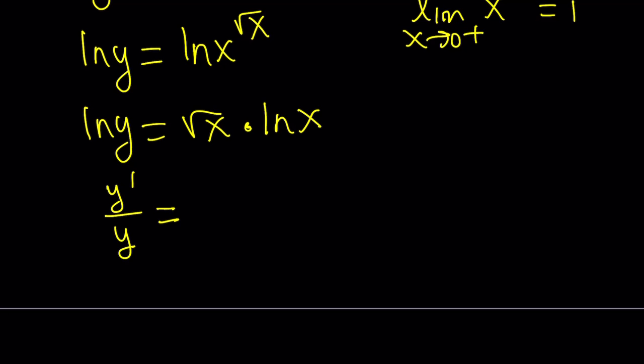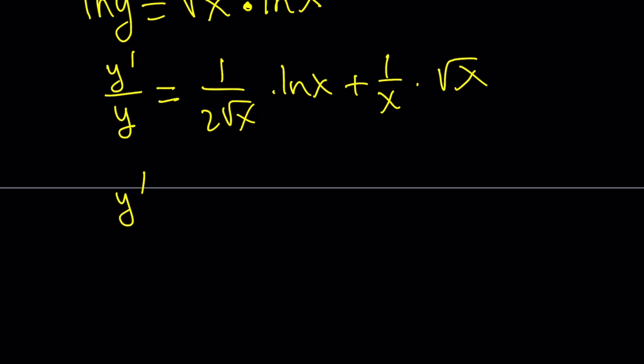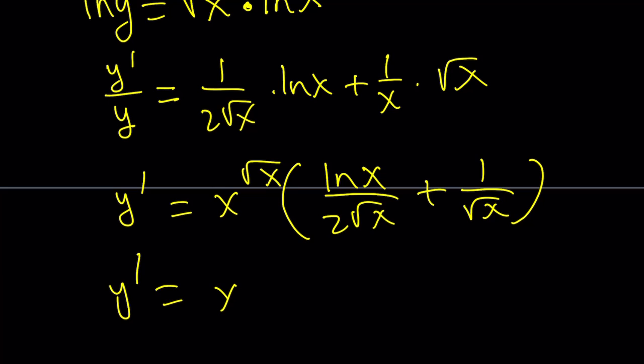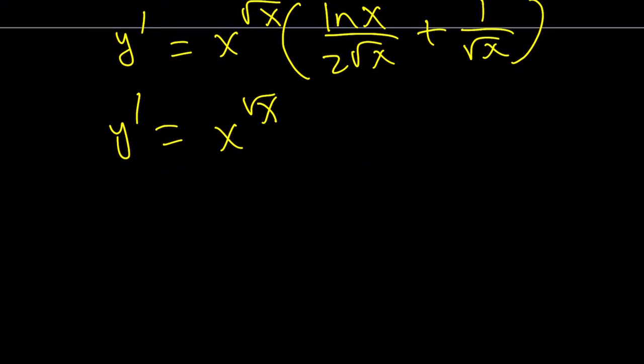I'm going to use the product rule on the right-hand side. The derivative of square root of x multiplied by LN x plus the derivative of LN x, which is 1 over x, multiplied by square root of x. From here, if you simplify this, to keep a long story short, if you make a common denominator, you're going to get LN x plus 2 divided by 2 square root of x. It's going to be multiplied by x to the power square root of x.